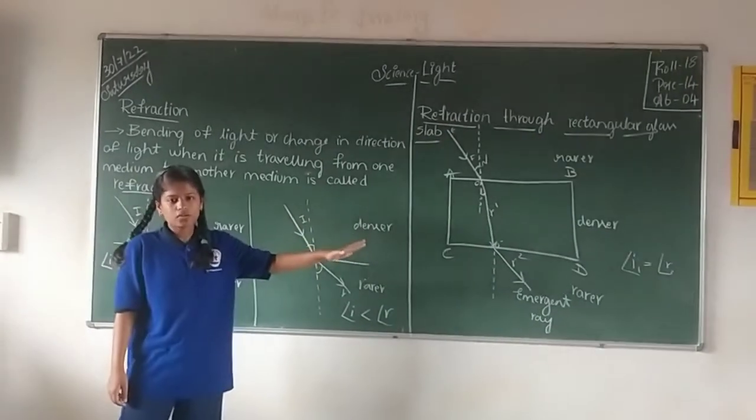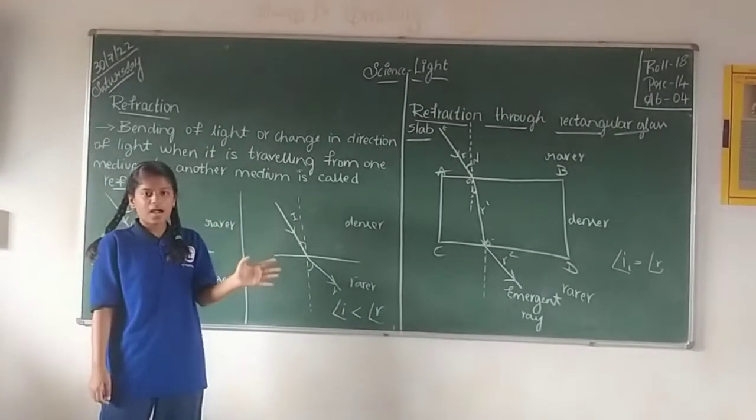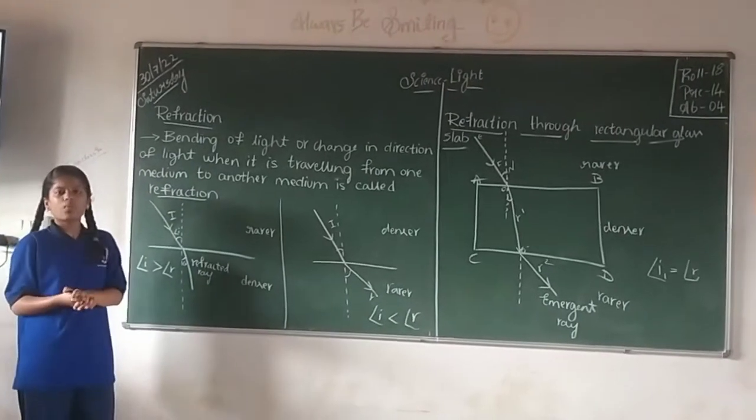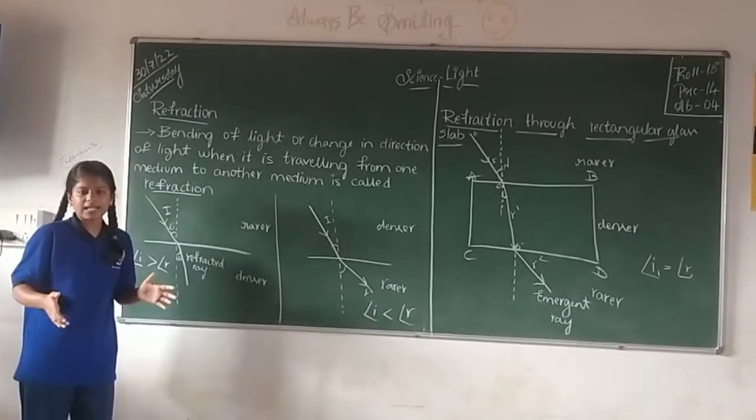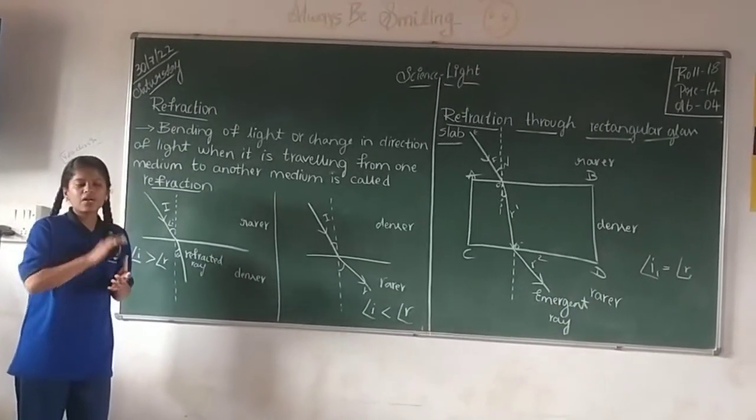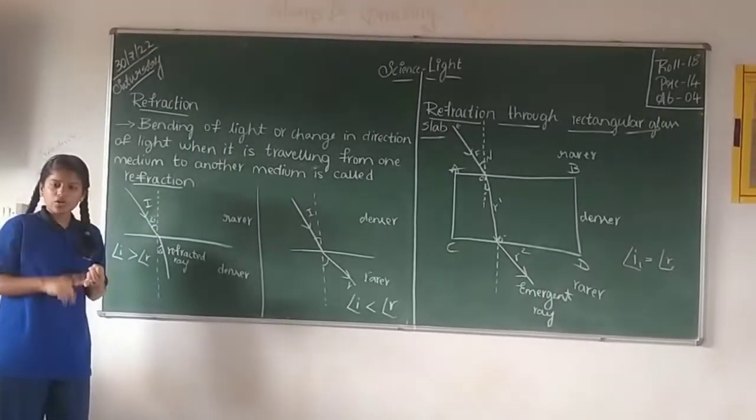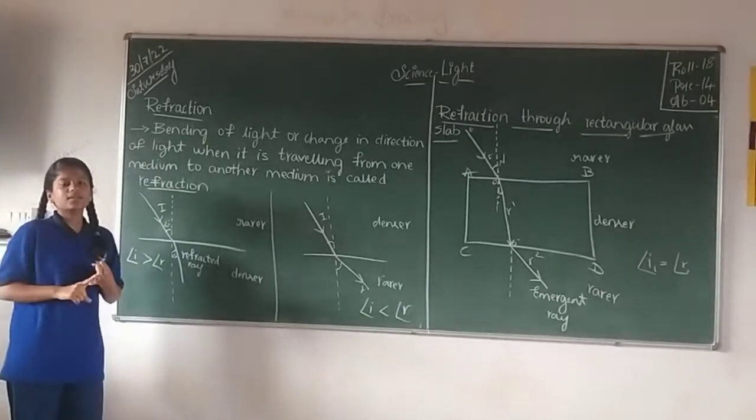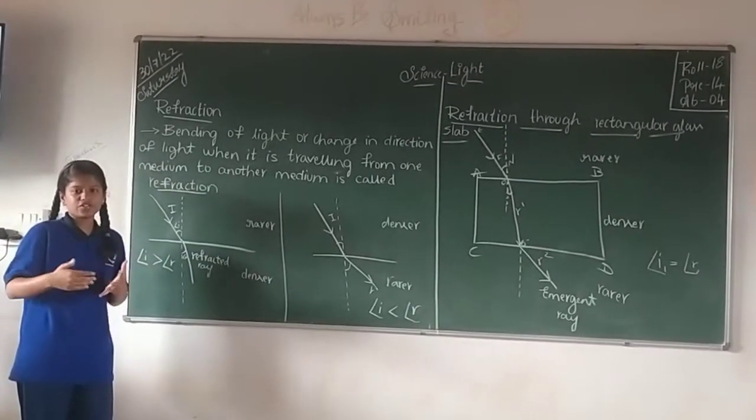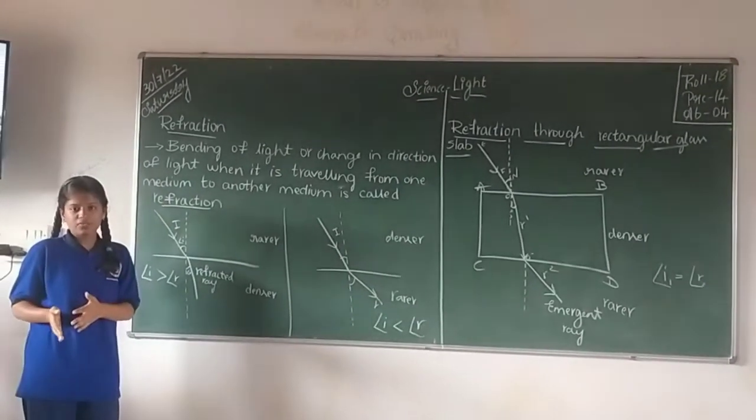So before I enter into that topic, we have to have basic idea about what is refraction. We keep on hearing one line that light travels in a straight line, but on one condition: when it changes from one medium to another medium, the speed of the light changes and the density or the refractive index changes in the medium, the direction of the light also changes.